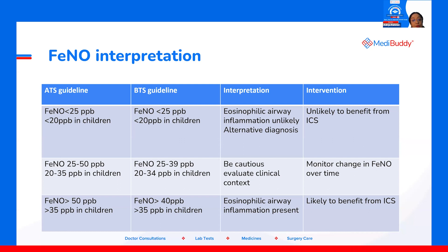If the number is low — less than 25 — it is unlikely this patient will benefit from ICS, inhaled corticosteroid, and eosinophilic airway inflammation is unlikely, so think about an alternative diagnosis. But if the reading is more than 50, you can be sure that this patient will definitely benefit from inhaled corticosteroid. There are some patients who are lying in the middle, so you have to be a bit careful, assess them from time to time, and monitor their changing behavior. Accordingly, you can decide whether they need more ICS, less ICS, or something else.